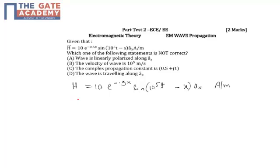Now, I know the standard equation as H is equal to A e to the power minus alpha x sine omega t minus beta x ax. Now, when I am comparing equation, let us say 1 and 2,